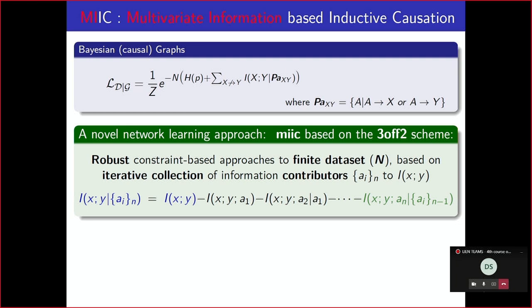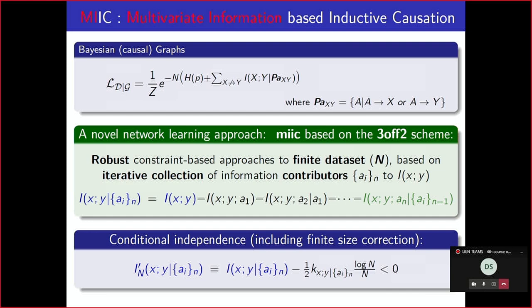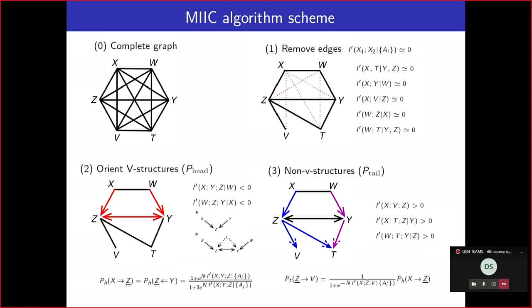At some point I compare these to a threshold term — the Z term that asymptotically looks like log(N)/N. When the finite-size-corrected mutual information becomes negative, it means I can remove the edge. This is how our method works. It's basically a constraint-based method that uses two-point and three-point multivariate information to remove edges and then orient them. When the three-point information is negative, it corresponds to V-structures and we assign head probabilities; when positive, we assign tail probabilities.